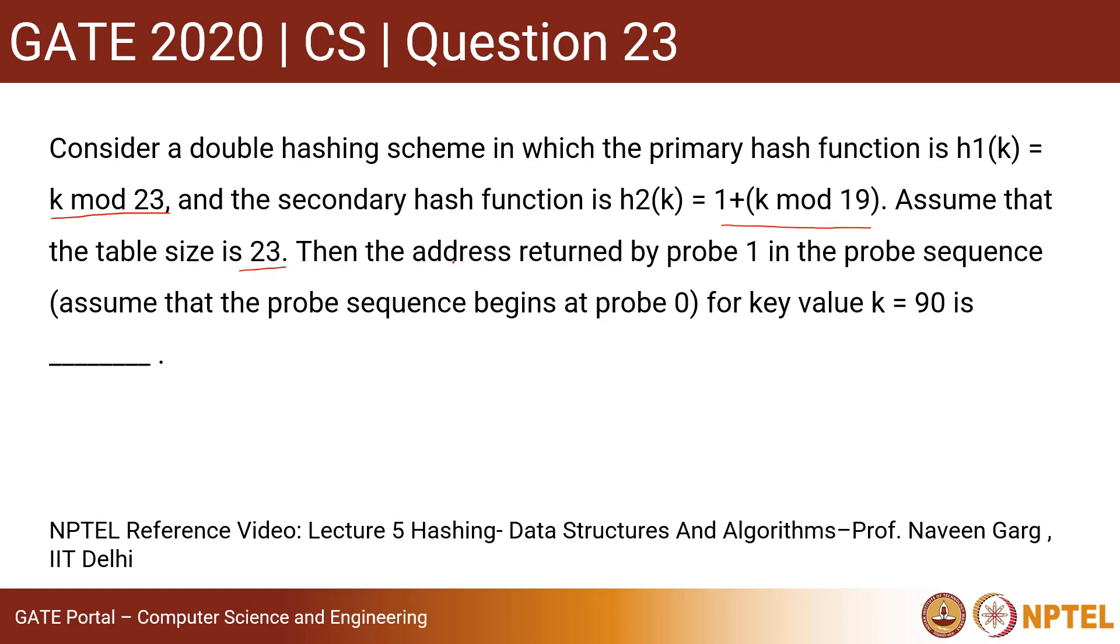Assume that the table size is 23. Then the address returned by probe 1 in the probe sequence, assuming that the probe sequence begins at probe 0 for key value k = 90, is blank.